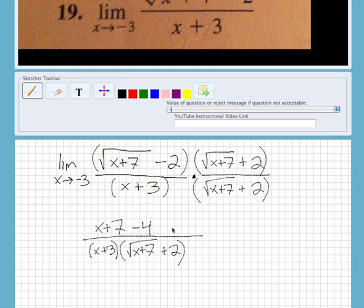So then we get x plus 3 over x plus 3 times square root of x plus 7 plus 2.